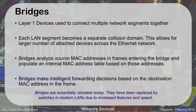For example, with Sarah on one side and Joe on the other, you'd have a hub on each side and a bridge in between. When Sarah wants to talk to Joe, her hub sends the message to the bridge, and the bridge only forwards it to the right side where Joe is sitting — without bothering the three people on the left side of the room. So these bridges make intelligent forwarding decisions.